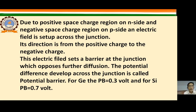A barrier is formed at the junction — the depletion region. This electric field sets a barrier at the junction which opposes further diffusion of electrons and holes.